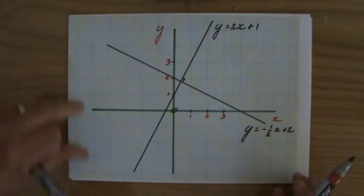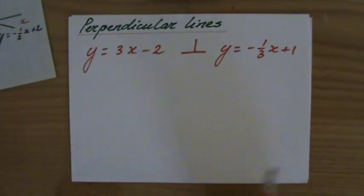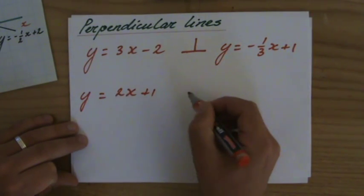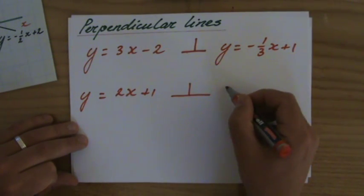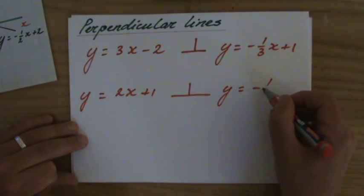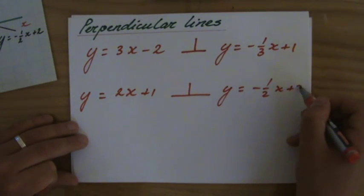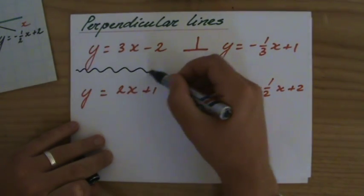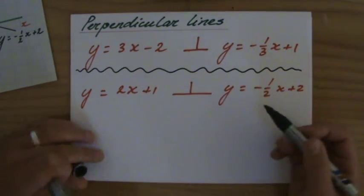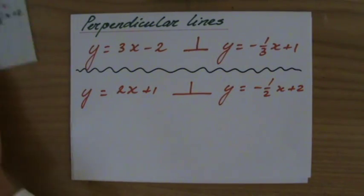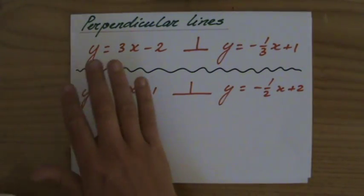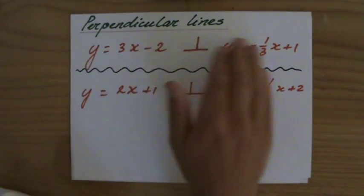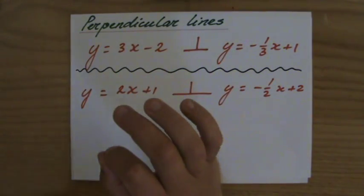So I'm also going to write those two equations down now here. So y equals 2x plus 1 is perpendicular to y equals minus a half x plus 2. I'm just going to put a little line here in the middle because these are two separate examples. But the reason why I wrote them here together is just to have a look at the relationship between perpendicular lines and their gradients.